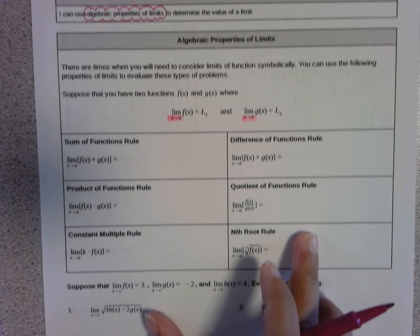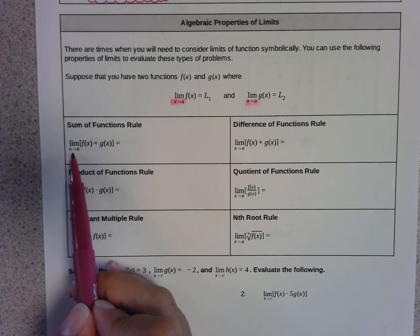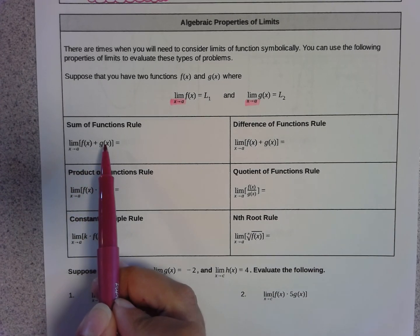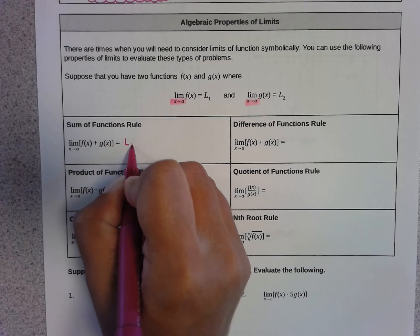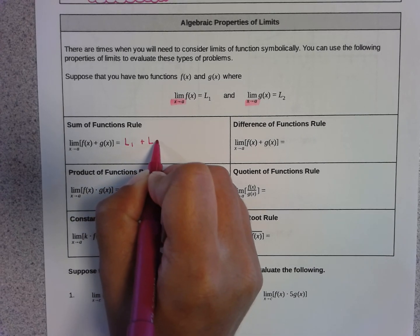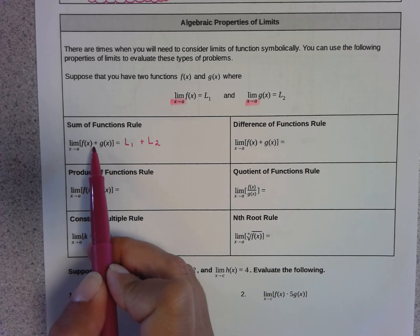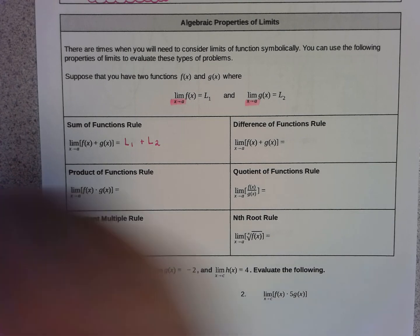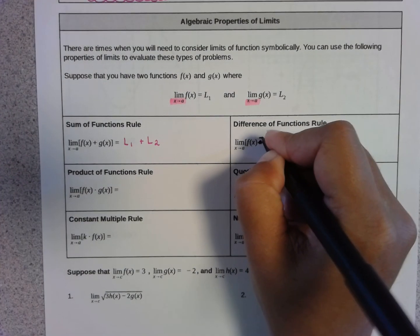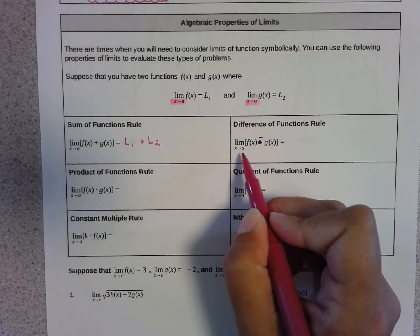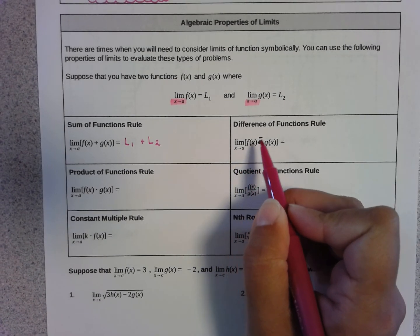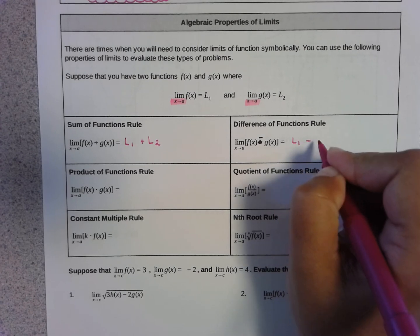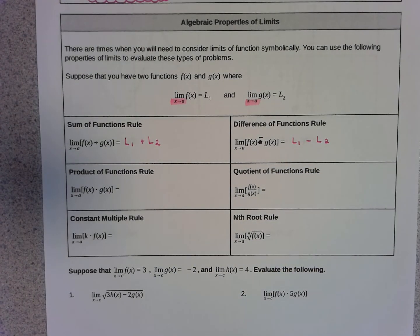The sum of functions rule says that if you want to find the limit as x approaches a of f(x) plus g(x), all you have to do is take the two separate limits and add them together. The difference of functions rule says that if you want to find the limit as x approaches a of f(x) minus g(x), you can subtract the separate limits. If you add the functions, you add the limits; if you subtract the functions, you subtract the limits.